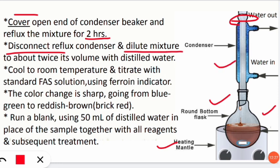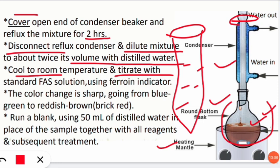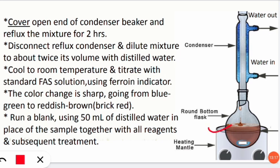After two hours, disconnect the reflux condenser. Dilute the mixture inside the round bottom flask with twice its volume of distilled water. Cool the chemicals to room temperature, then begin titration. In the burette, take the standard solution of FAS (ferrous ammonium sulfate). In the conical flask, place the reflux mixture from the water sample and add the ferroin indicator. The color change will be from blue-green to brick red, indicating the endpoint.